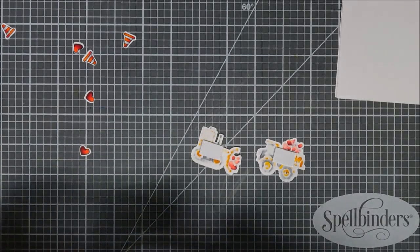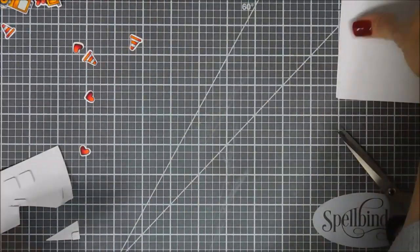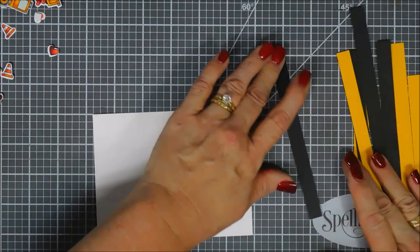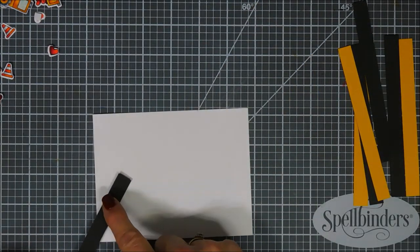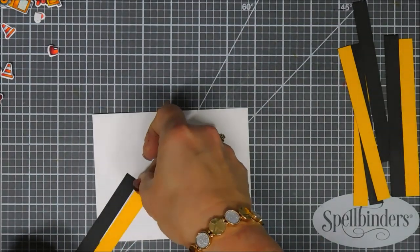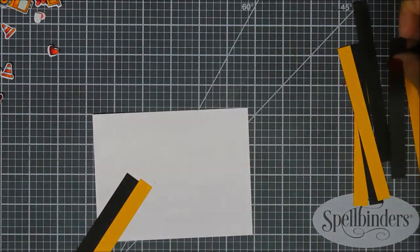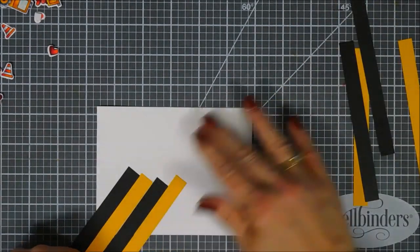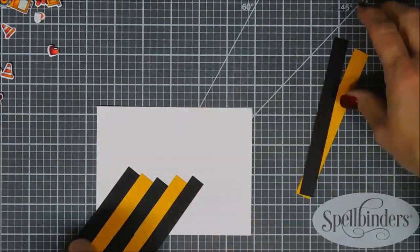Now today's card is going to be pretty simple. I wanted to create kind of a striking background that would stand out, so I went through my pattern papers and I couldn't find a yellow and black striped paper, so I'm going to make my own. I cut out some thin strips - they're half inch strips of yellow and black cardstock - and then I'm just adhering them to the very bottom of a five and a half inch wide panel here.